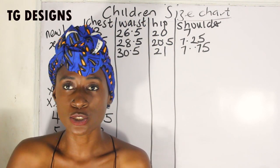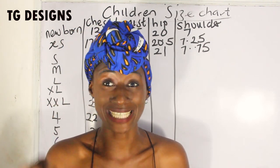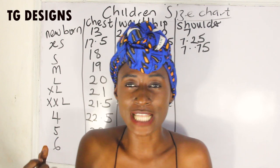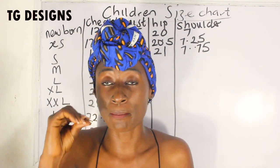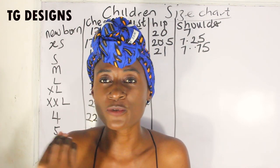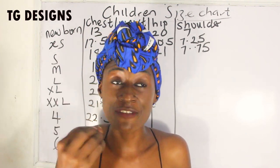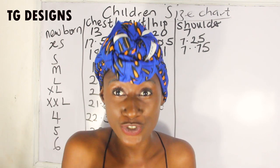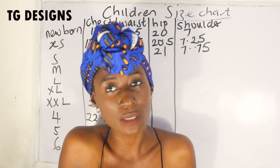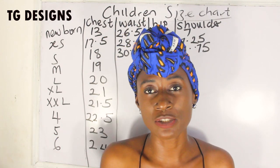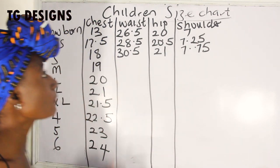Also note that when you are taking children's measurements — even though you want it to be fitted — it should not be too tight. It's not like women's dresses where everything is very fitted. When making children's outfits, please make sure the dress is not tight, because trust me, if a child puts on a tight dress they will let you know they are not comfortable. Try to loosen up the measurements a little.